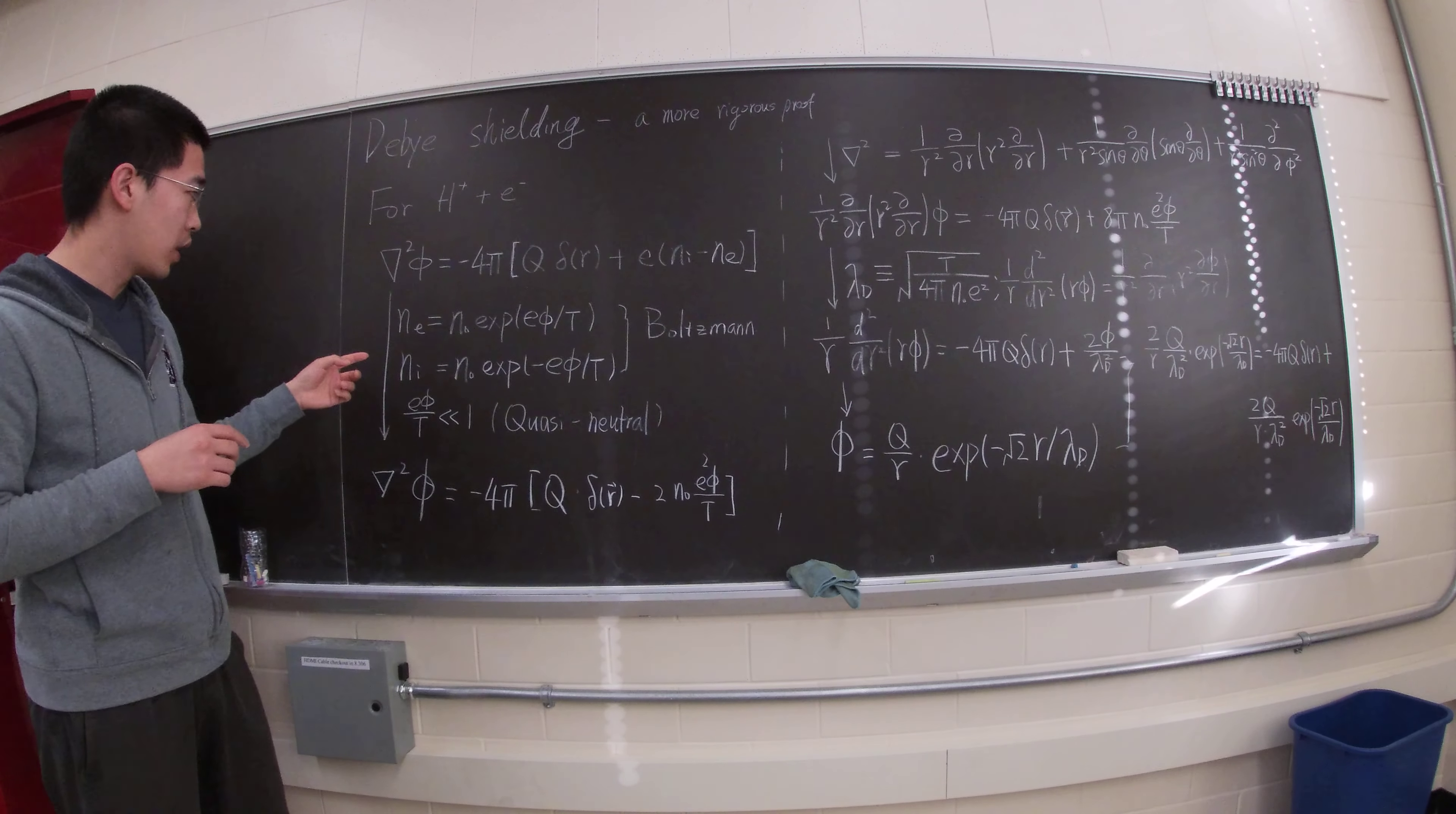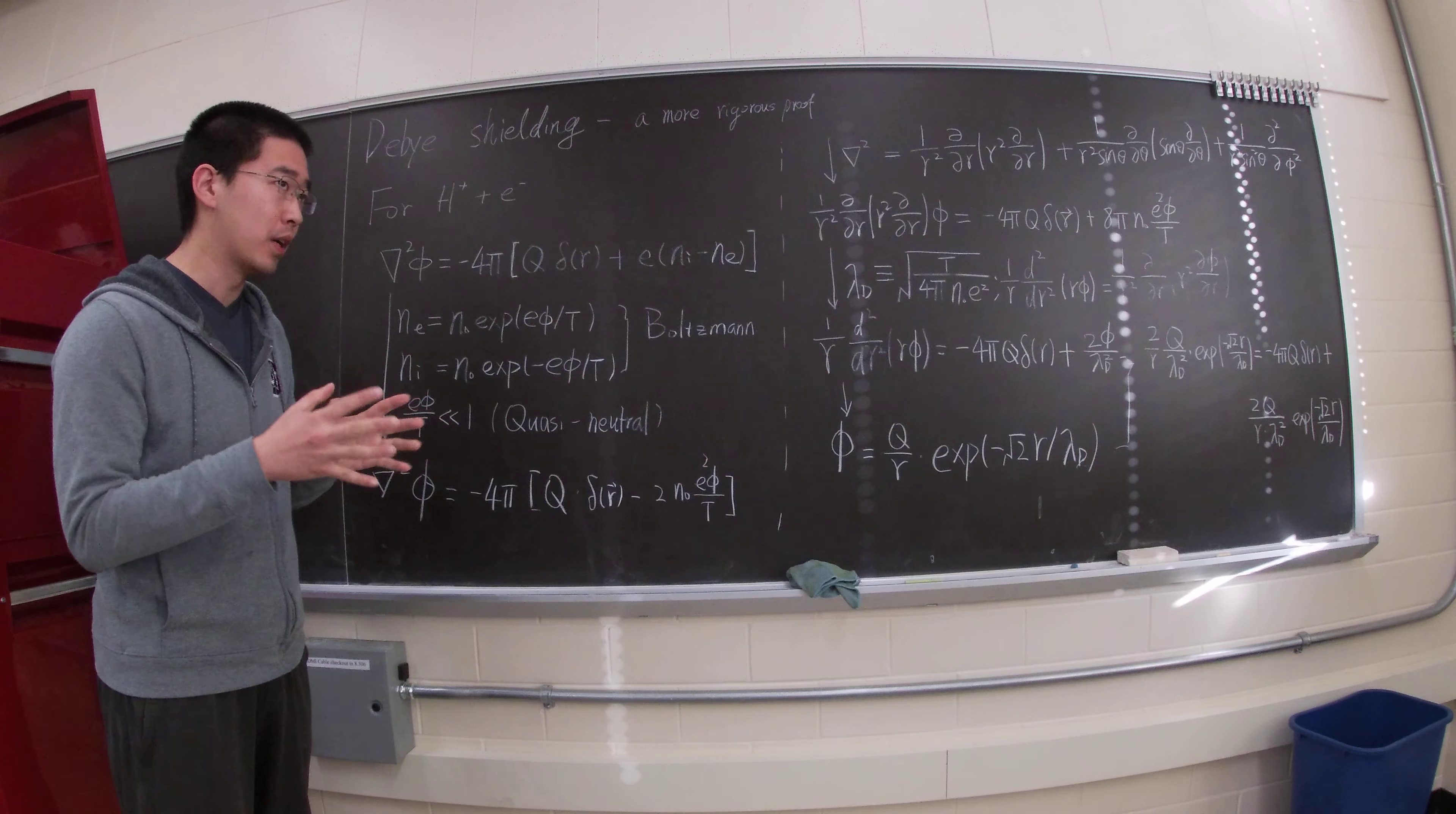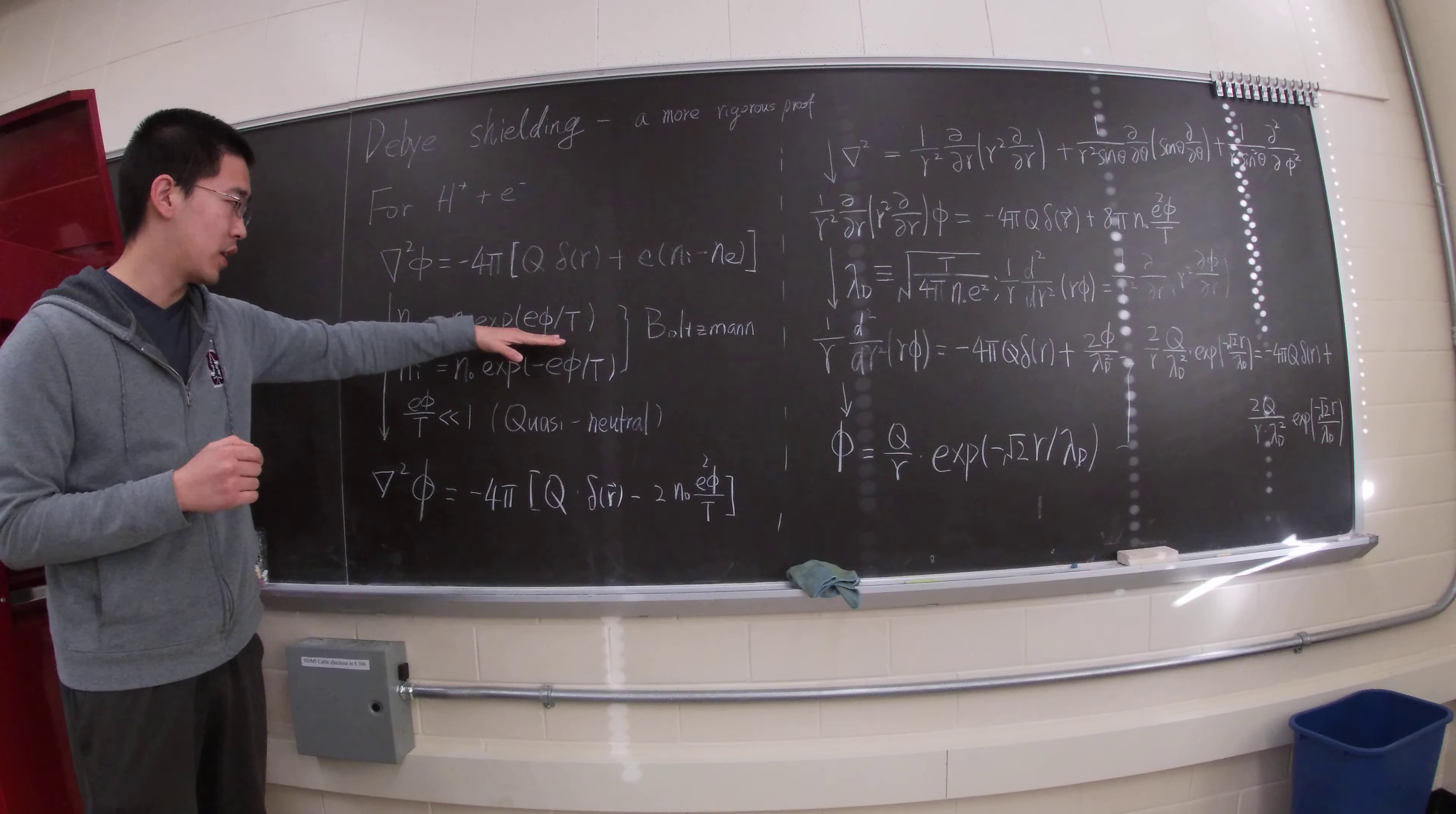And we can assume that the electron ion are in the Boltzmann distribution. By Boltzmann distribution, I mean the energy, the electric energy is distributed by the thermal diffusion. Those two different energies are competing with each other. So, if we impose a quasi-neutrality, e phi over t much less than 1, we can just take the first order.